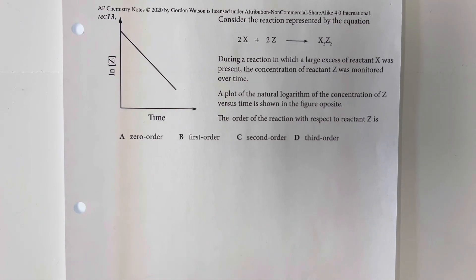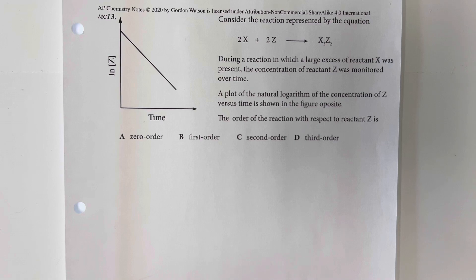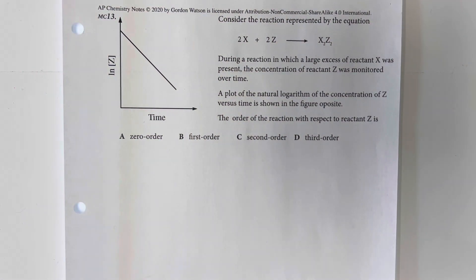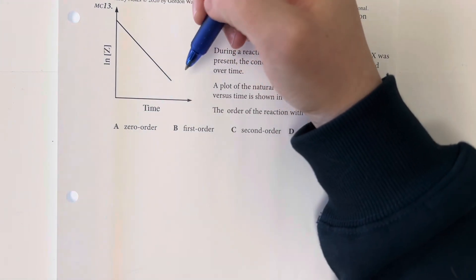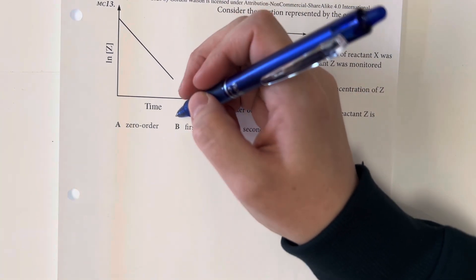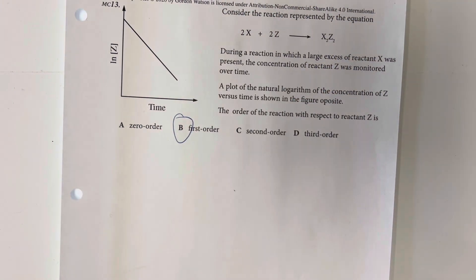Consider the reaction 2X + 2Z → X2Z2. During the reaction, in which a large excess of reactant X was present, the concentration of reactant Z was monitored over time. The plot of the natural log of the concentration of Z versus time is shown in the figure. The order of the reaction with respect to reactant Z is: when dealing with first order reactions and the natural log of that reaction, if I am having a downward slope, this is going to be a first order reaction with respect to Z.